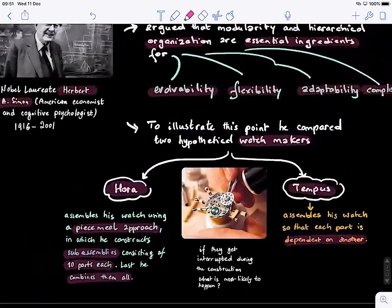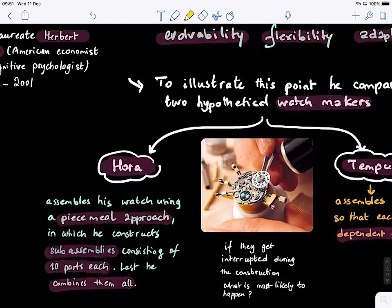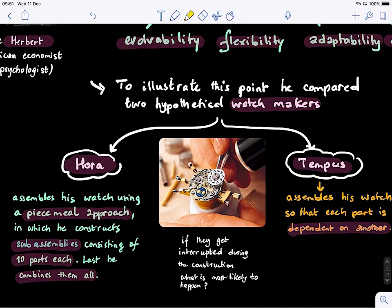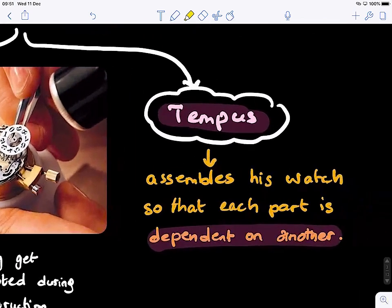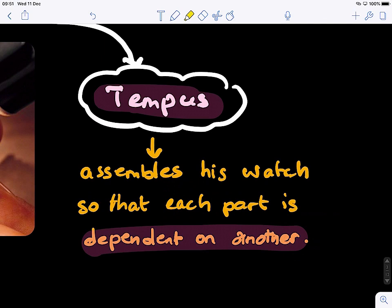Now, the problem is that imagine these watchmakers get interrupted for any reason. What do you guys think? Which one would be able to be more efficient in finishing their task on time? It should be Hora. No, Tempus, because if you interrupt him, he needs to restart over again. Let's say you're doing it sequentially, but you don't know - there are so many pieces that are similar. You don't know where you have left off, so it might confuse you and you need to start over again.